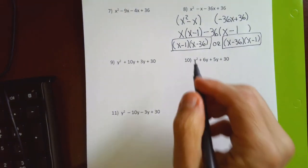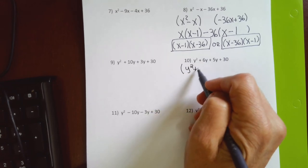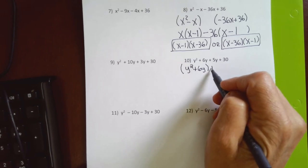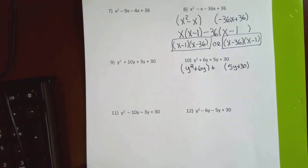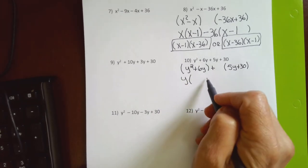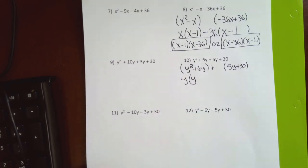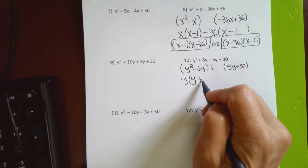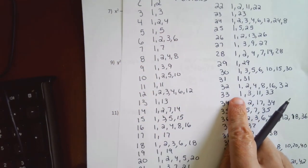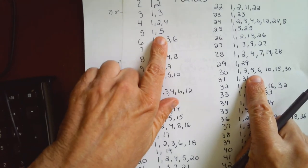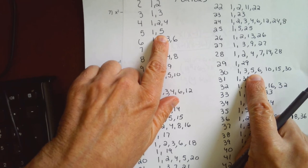For problem 10, I put y² + 6y in the first parenthesis and 5y + 30 in the second, with the plus sign in front. The first parenthesis: both terms have a y, so I factor out y to the first, leaving y and then 6 after the plus sign. For the second parenthesis, the GCF of 5 and 30 is 5, so I put a 5 in front.